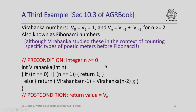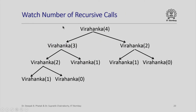We might also want to watch how many recursive calls are being made. To compute Virahanka(4), we recursively call Virahanka(3) and Virahanka(2). To compute Virahanka(3), we call Virahanka(2) and Virahanka(1). And to compute Virahanka(2), we call Virahanka(1) and Virahanka(0), which are the termination cases.